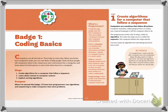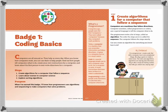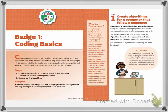Computers are machines that follow direction. Computer scientists are called programmers or coders, and they use special languages to tell computers what to do. Programmers write a list of steps called an algorithm, and the order of those steps is called the sequence. Computers follow the steps exactly, and basically, if something goes wrong with your sequence, you did something wrong in building the code.